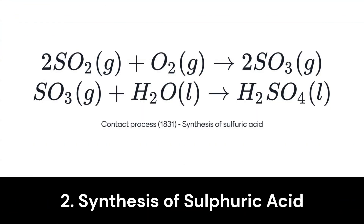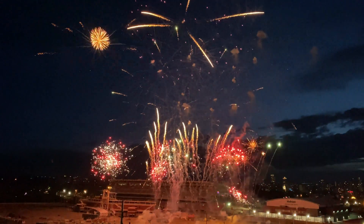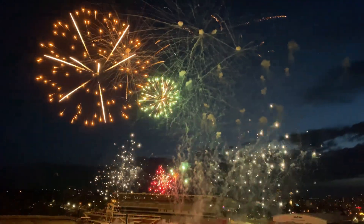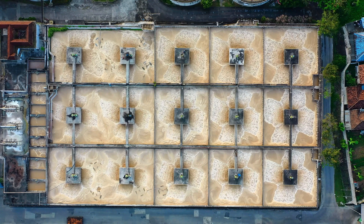Next up is the contact process, which paved the way for modern industrial chemistry. It involves the conversion of sulfur dioxide and oxygen into sulfur trioxide. The sulfur trioxide then reacts with water to form sulfuric acid. This crucial reaction is the backbone of numerous industries, from producing fertilizers to manufacturing dyes, explosives, and so much more.